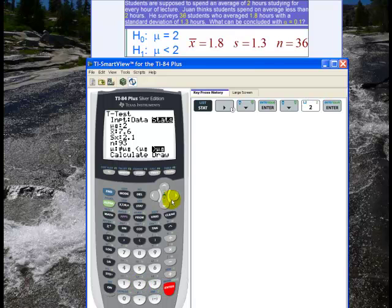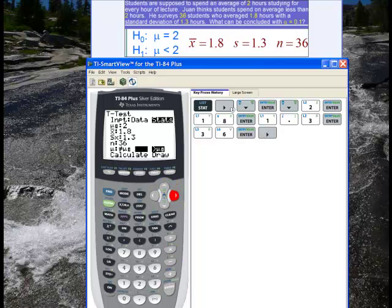Enter. X bar is 1.8. Enter. S is 1.3. Enter. N is 36. Enter. And H1 is mu is less than 2, so I want less than mu naught. And then I hit enter. And then I go down to calculate and hit enter again.